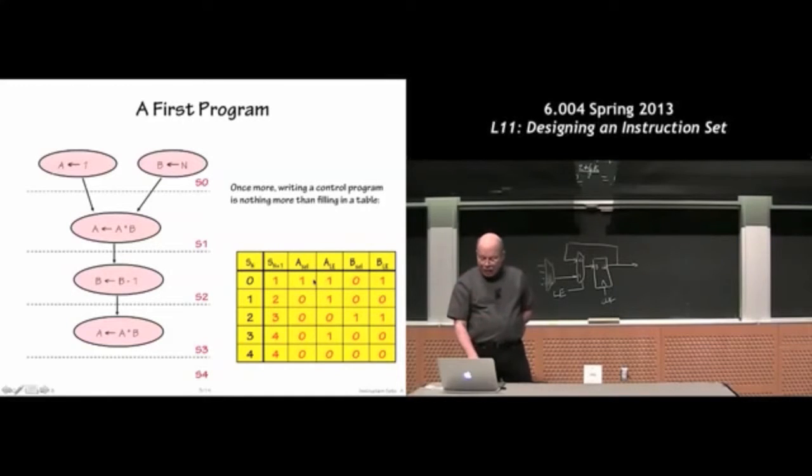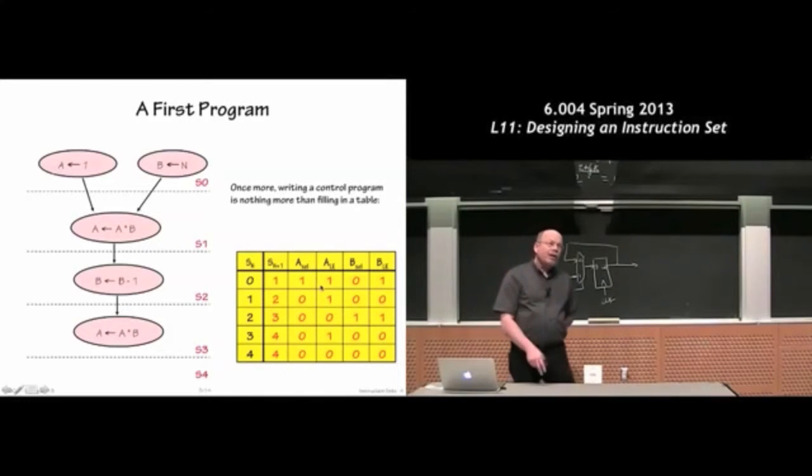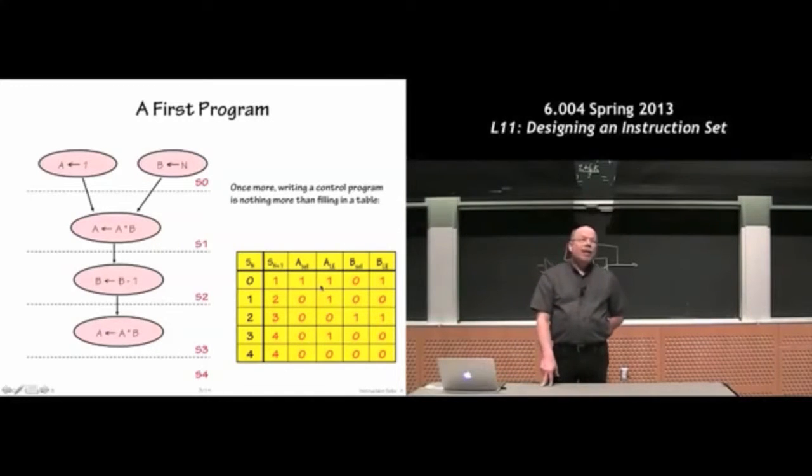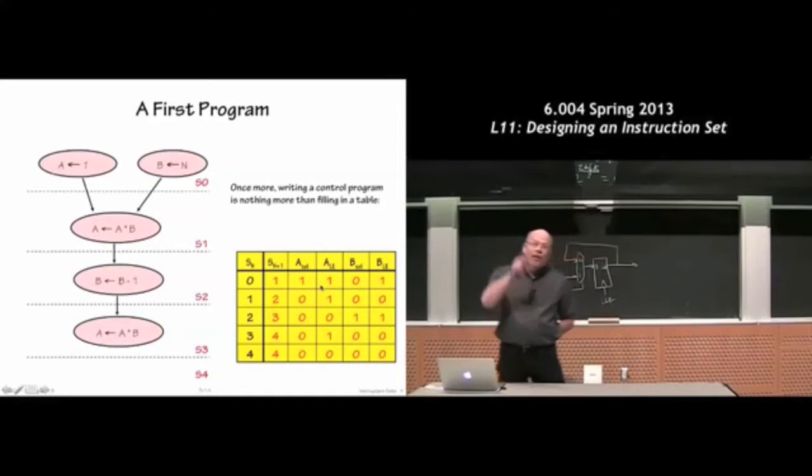So for example, if you look back at your data path, when the load enable signal for A (the ALE signal) is one, we're selecting the value one to stick into register A. And we actually load register A because A select is one.